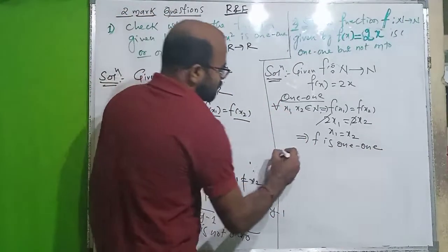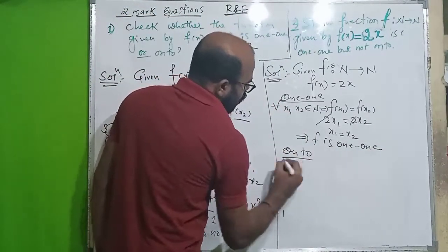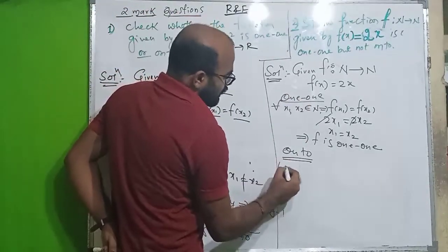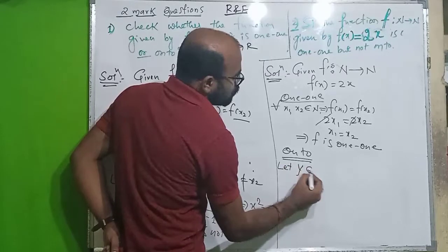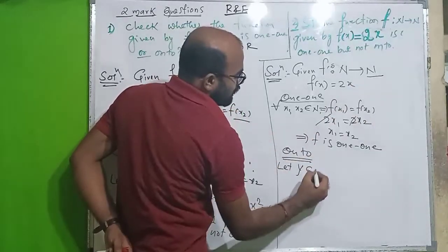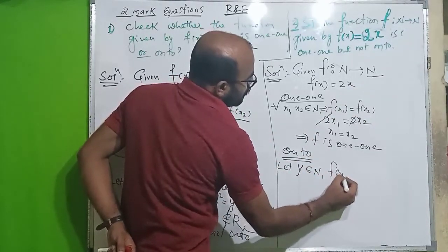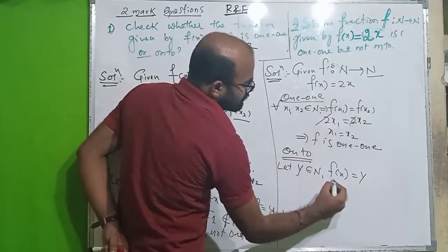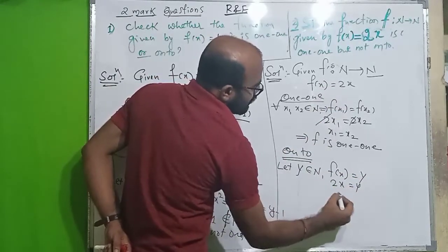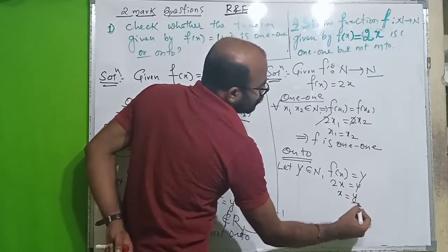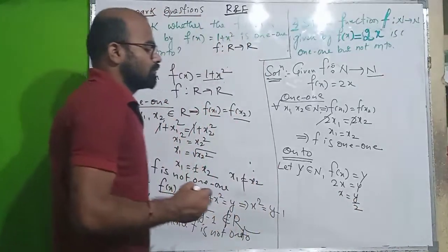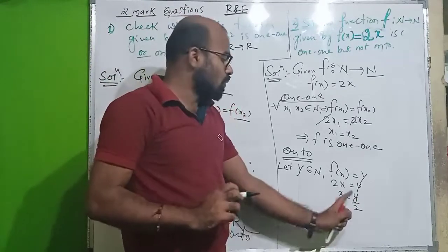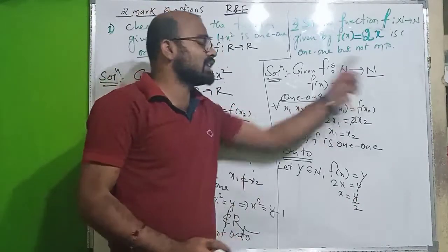But we need to check if f is onto. For the onto check, let y belong to the second set, which is also N, and set f of x equal to y. So 2x equals y, which gives x equals y by 2. Now check whether y by 2 belongs to N. If y equals 1, then x equals 1 by 2.